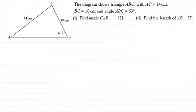Hi there. In this question we're given this diagram that shows triangle ABC with AC being 14 centimeters, BC being 10 centimeters, and angle ABC being 63 degrees. We've got to first find angle CAB and then find the length of AB.